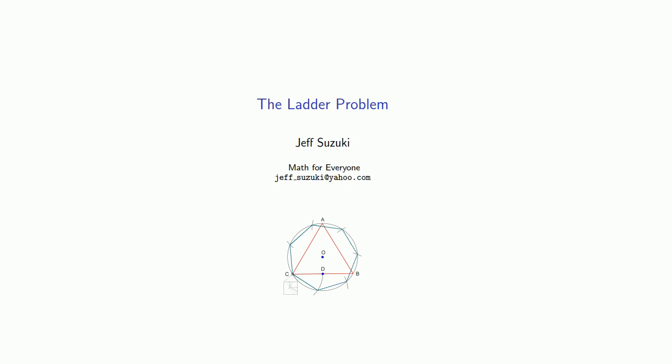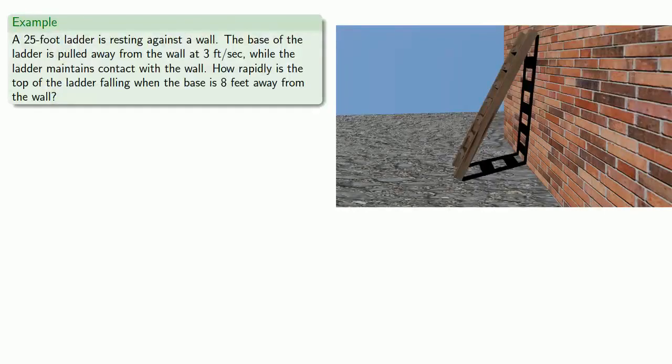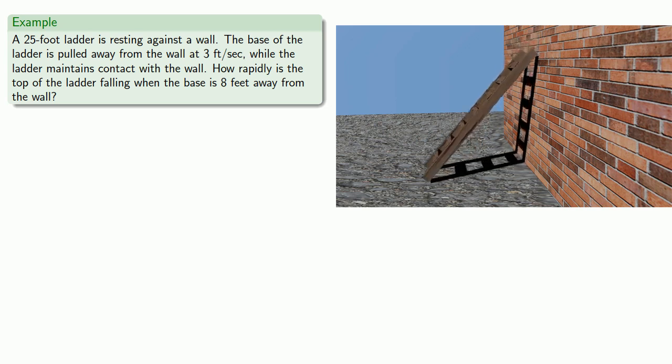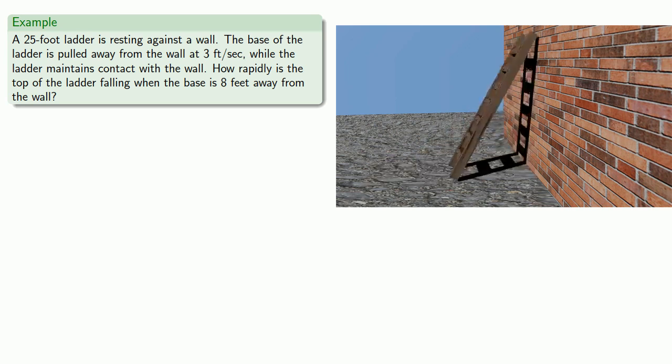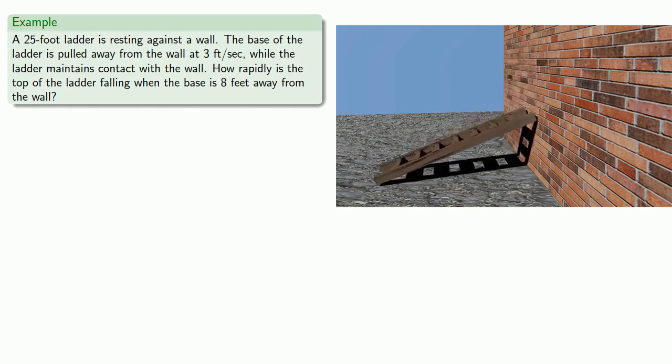So here's the situation. We have a 25-foot ladder resting against the wall and the base of the ladder is moving away from the wall at 3 feet per second while the ladder itself maintains contact with the wall. So how rapidly is the top of the ladder falling when the base is 8 feet away from the wall?